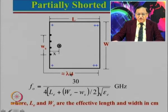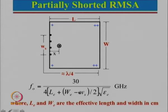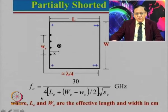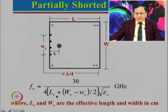This configuration corresponds to lambda by 4. The total effective length L_e is the effective length plus (w_e minus w_s) divided by 2, where w_s is the shorting width. This total length is divided by the square root of epsilon_e. One can see that for the same frequency, length will be less if this partial shorting portion is larger. If w_s equals w_e, L_e will be the maximum value; if w_s is reduced, L_e will have a lower value.